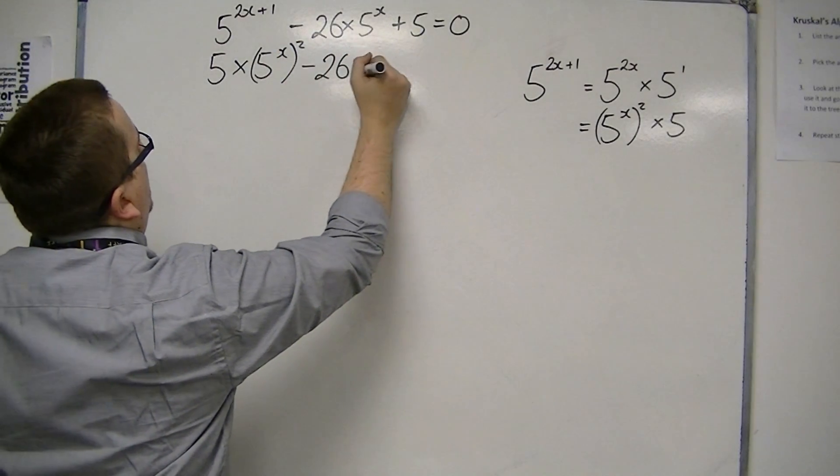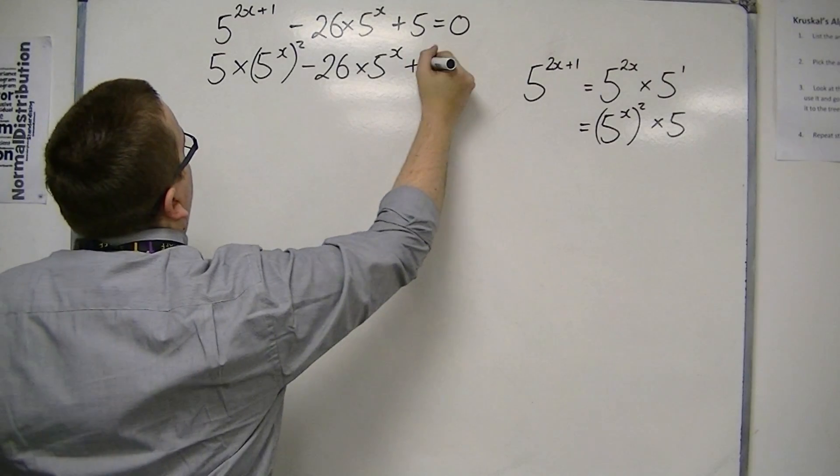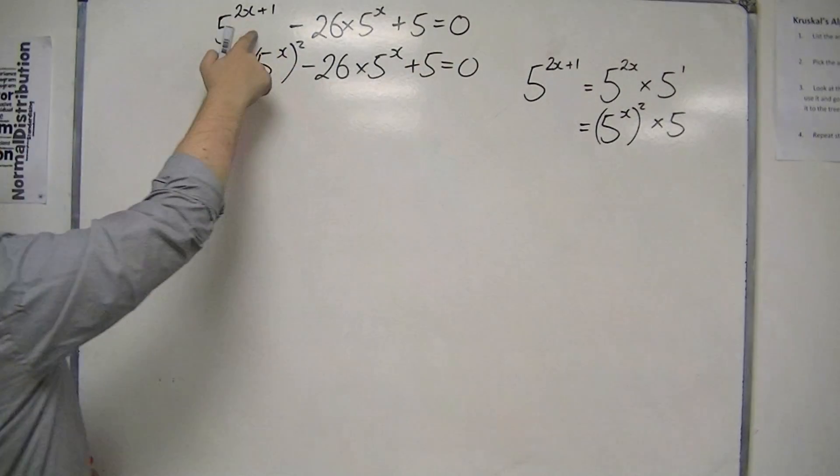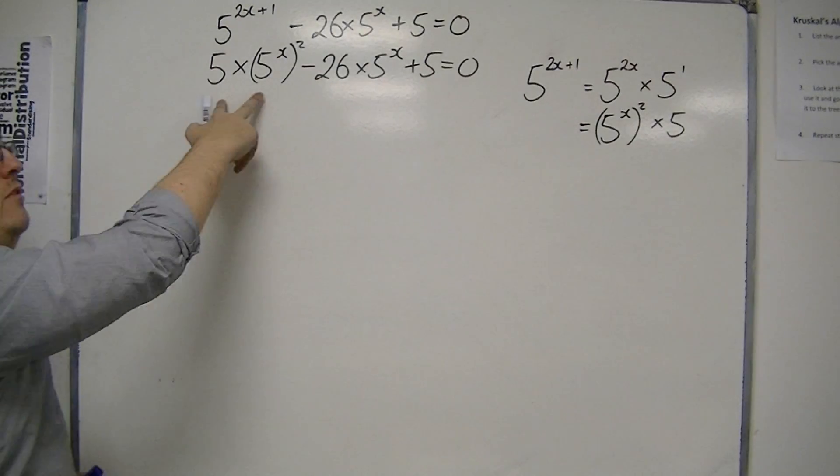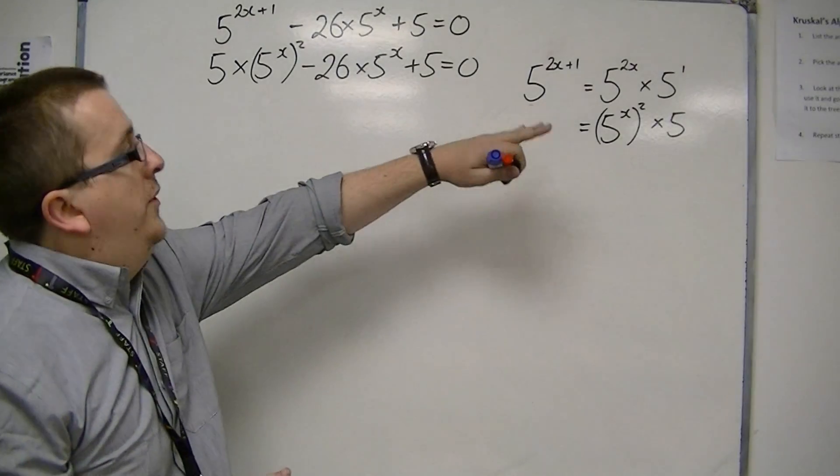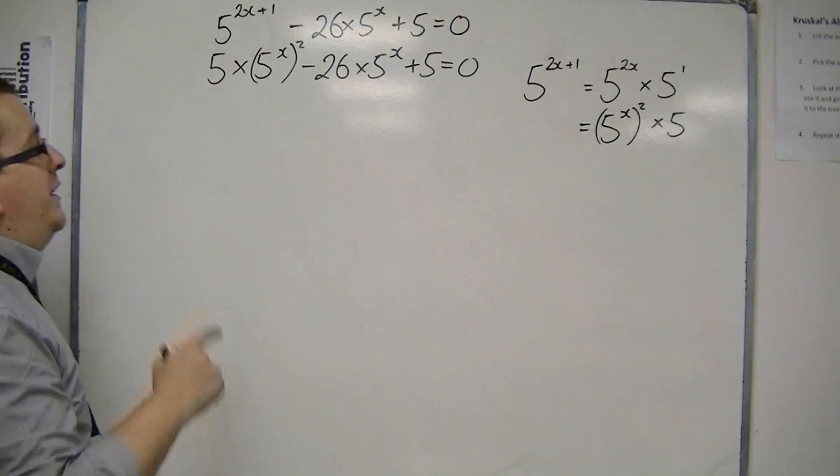Take away 26 times 5 to the x plus 5 is 0. So it's just that 5 to the 2x plus 1 has become this. So that is my manipulation of indices to get it to that point.